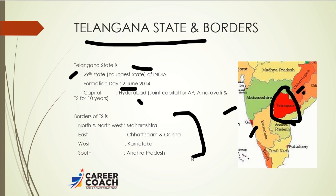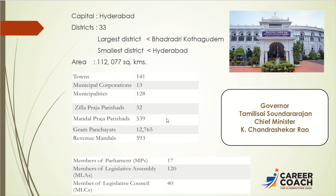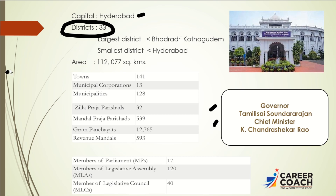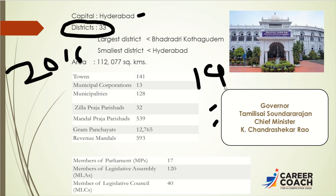The capital of Telangana is Hyderabad. The present Chief Minister is K. Chandrashekar Rao and the Governor is Tamilisai Soundararajan. Telangana has 33 districts; earlier it had 10 districts when formed in 2014. On 11th October 2016, 21 new districts were formed. Subsequently, two more districts — Mulugu and Narayanpet — were added on 17th February 2019, bringing the total to 33 districts.